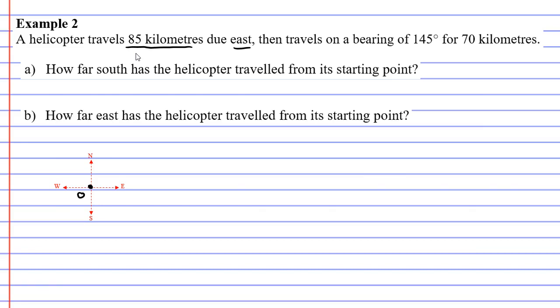If we're going 85 kilometers east, we're going to the right. Let's do a really nice long line here. Put a dot, let's call it A, and this is 85 kilometers.